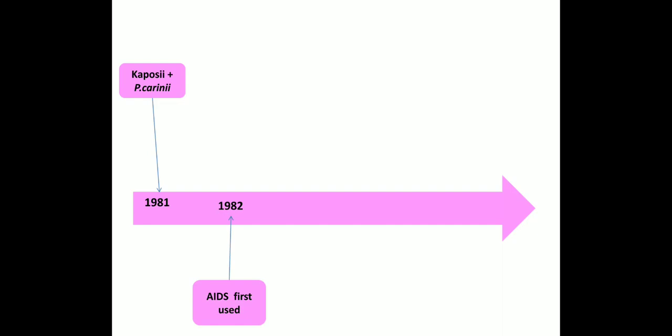Looking at the timeline of discovery, in 1981 Kaposi's sarcoma and Pneumocystis jirovecii pneumonia were indicated as the AIDS-defining illnesses. Subsequently, on further analysis of the clinical symptoms in these homosexual individuals, the word AIDS was first coined in the year 1982. AIDS stands for Acquired Immuno-Deficiency Syndrome. It was also interestingly called as the slim disease because the people had a profound weight loss of greater than 50% of their body weight.